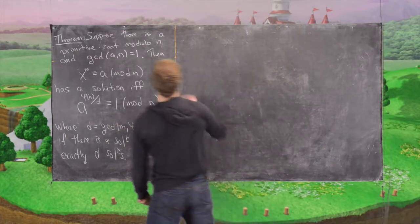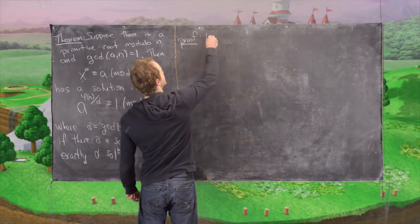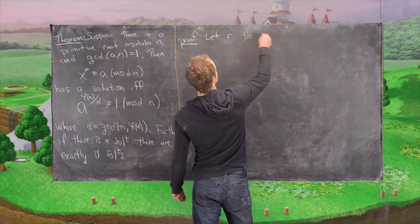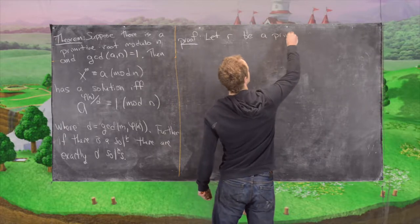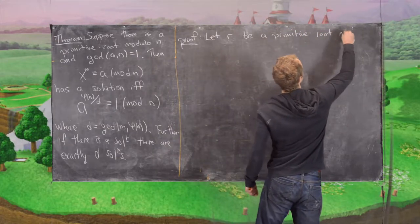Let's look at the proof. First, let r be a primitive root modulo n.